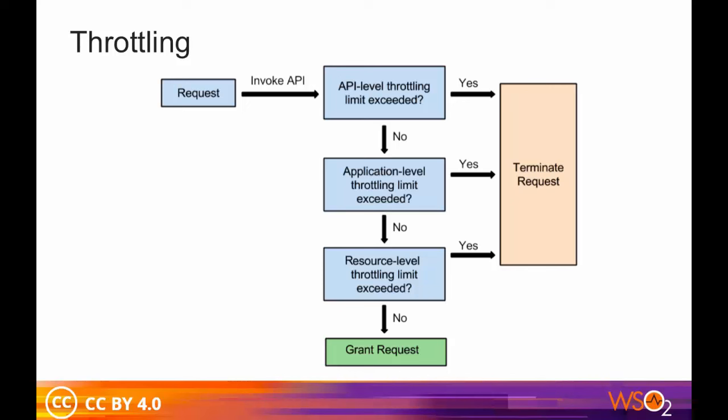There are four different levels of throttling: API level, application level, resource level, and IP level. When the API level throttling is selected, the subscriber is granted a maximum number of requests to the API according to the tiers the subscriber selects.